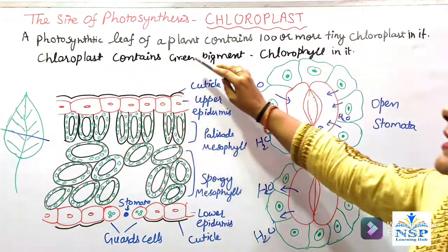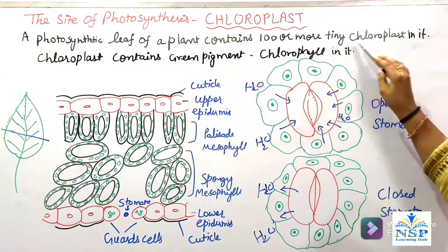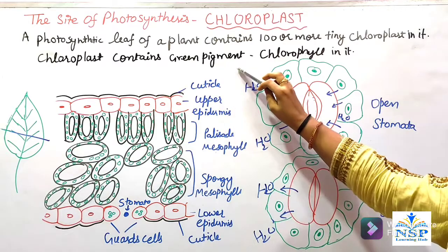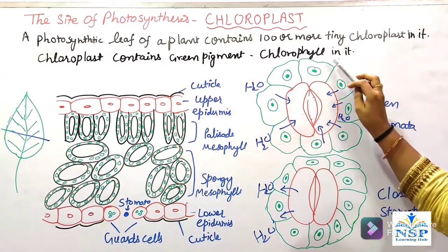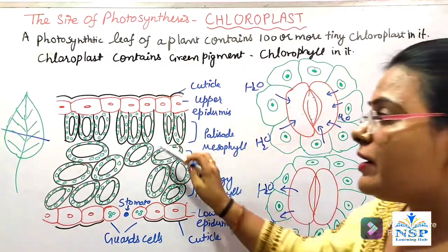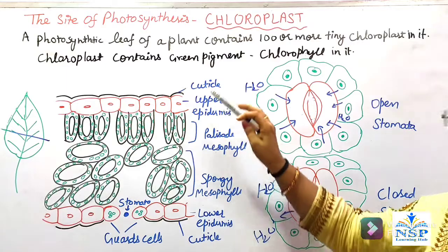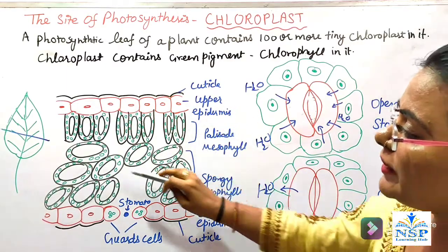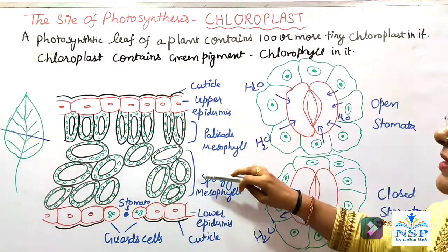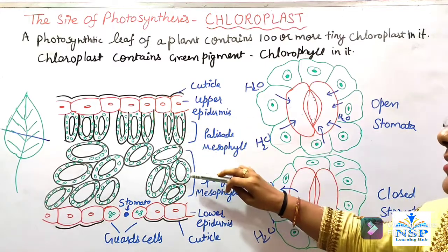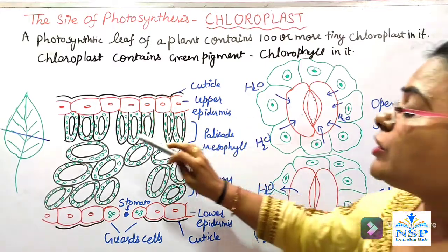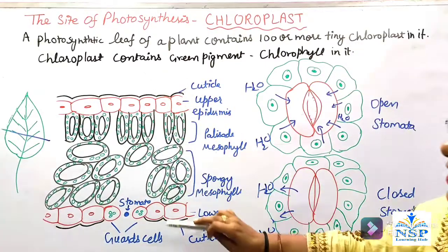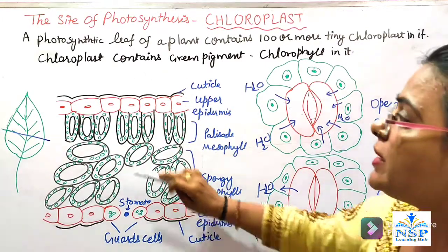A photosynthetic leaf of a plant contains a hundred or more tiny chloroplasts in it. Chloroplast contains a green pigment which is called chlorophyll. Chlorophyll help करता है photosynthesis में sunlight को trap करने के लिए। तो यह जितने भी green dots दिखाई दे रहे हैं, सब chloroplast हैं और इसके अंदर chlorophyll present होता है।